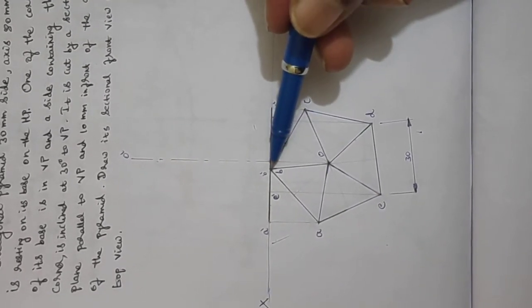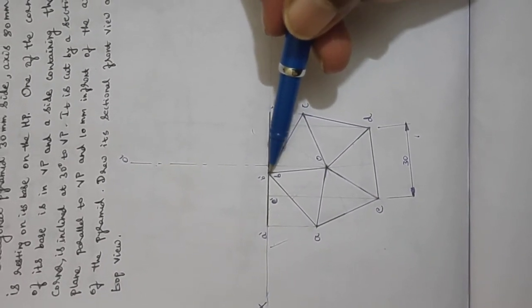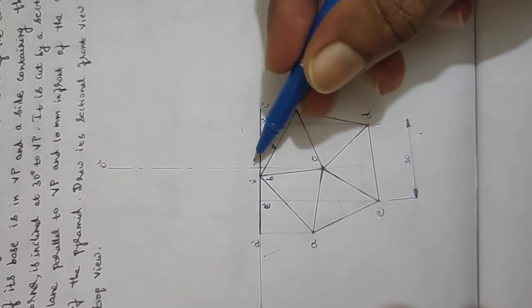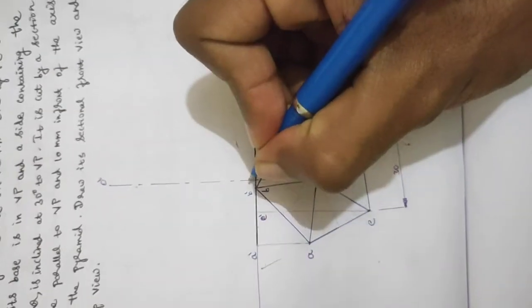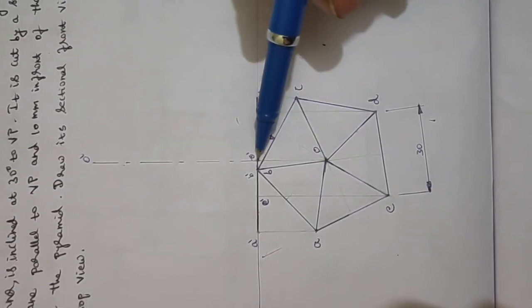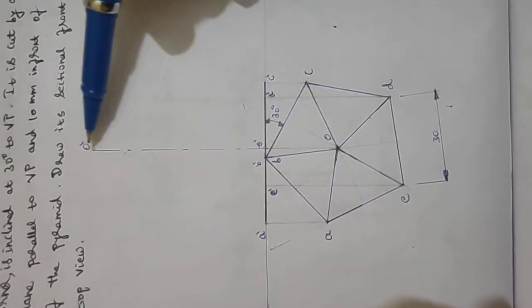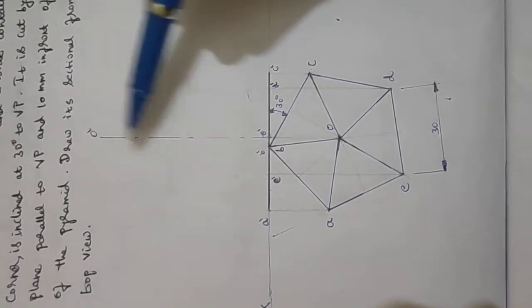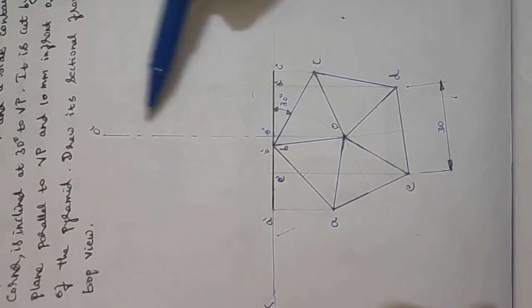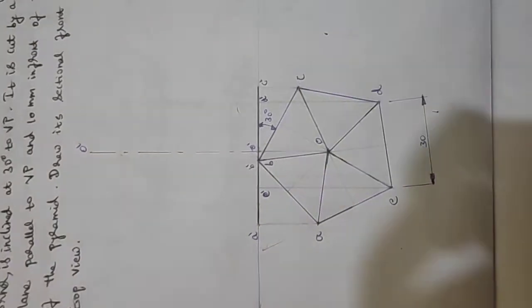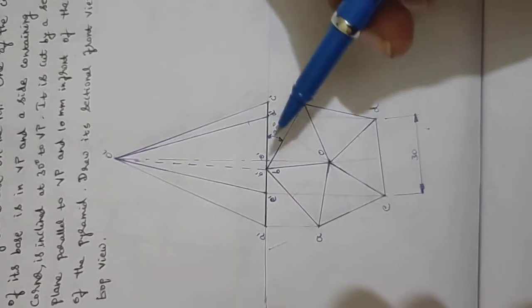The base already lies in HP. This is the front view. We have the axis - the axis is the baseline. The apex is O dash. We connect E dash, B dash, D dash, and C dash to complete the view.